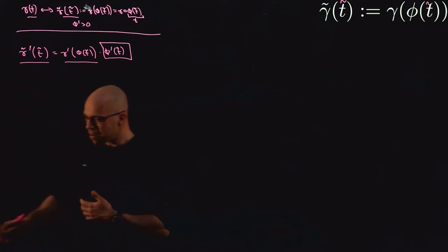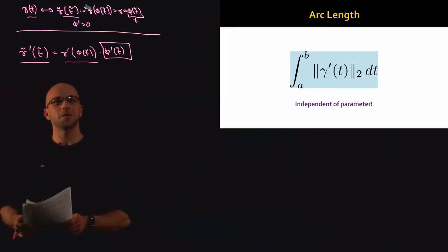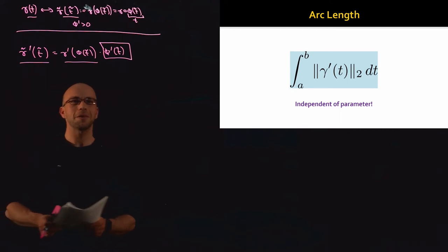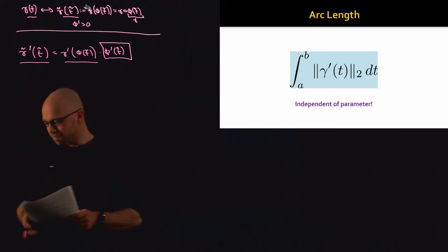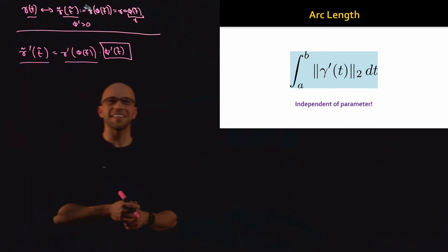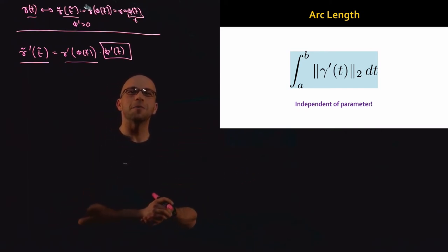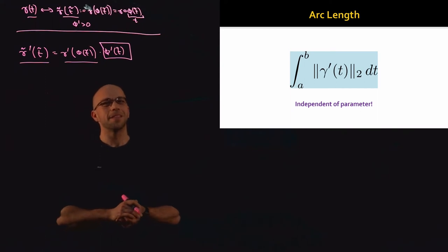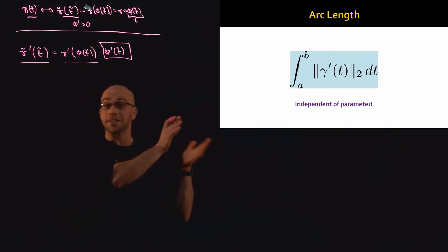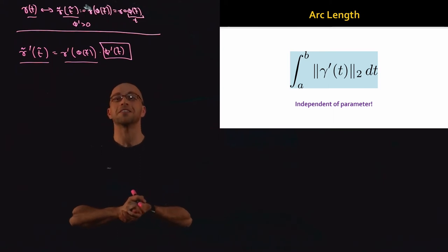Now let's talk about a formula that is invariant to our choice of parameter — and that, unsurprisingly, is the length of a curve. Hopefully you remember from calculus that if you have a curve gamma(t), you can compute its length using the integral of the norm of the first derivative of the curve.